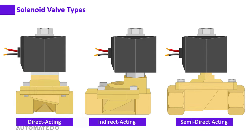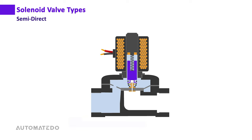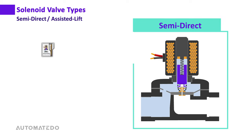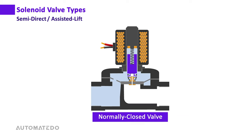Next, we consider the semi-direct acting, or assisted lift, solenoid valve. It consists of coil winding, armature, spring, plunger, orifice, diaphragm, and valve body. This valve combines the characteristics of both direct and indirect valves, with the key difference that the plunger is attached directly to the diaphragm.